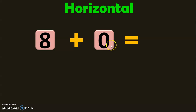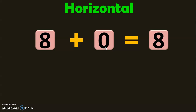We have 8 plus 0. From the properties of addition, we have already learned that when 0 is added to any number, the answer will be the same number. So 8 plus 0 is equal to 8. I have dealt with the properties of addition in a separate video, the link to which is given in the iCard section and also in the description box.